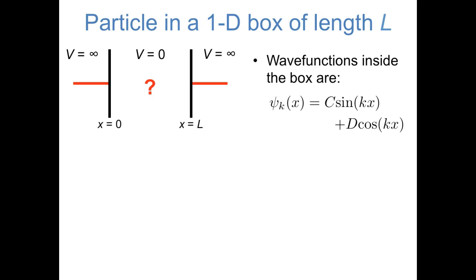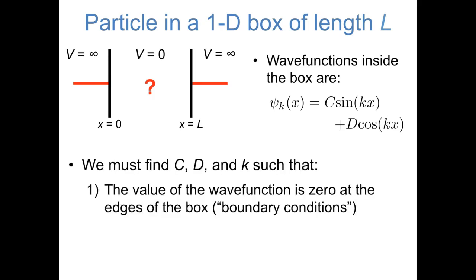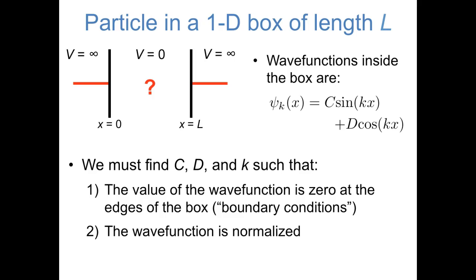We have a few pieces of information that allow us to do this. First of all, we know that the value of the wave function has to be zero at the edges of the box. Because the wave function is zero outside the box and it has to be continuous, that means the wave function at the edges, x equals zero and x equals L, has to be zero. These sorts of statements are called boundary conditions, and we'll see them throughout quantum mechanics. The other piece of information we can use is the fact that this wave function will be normalized. With these boundary and normalization conditions, we can completely figure out the values of c, d, and k.